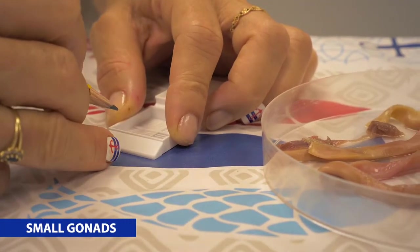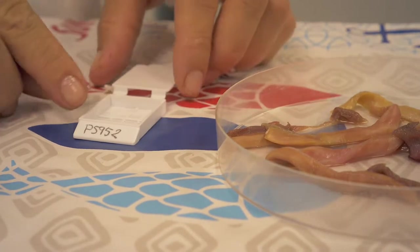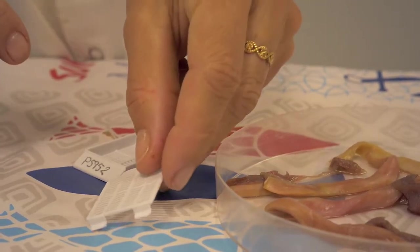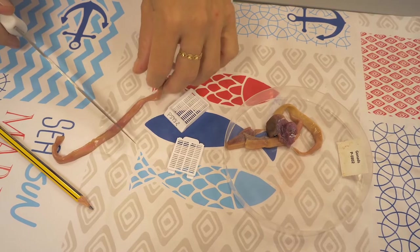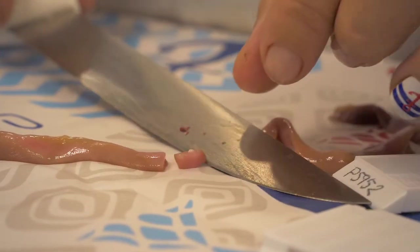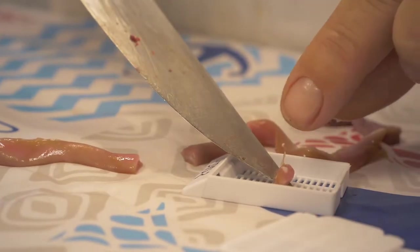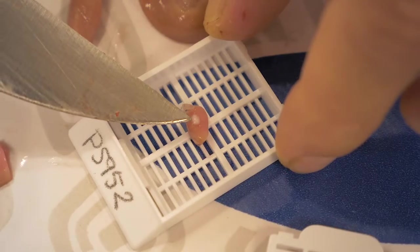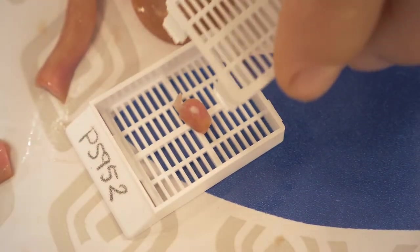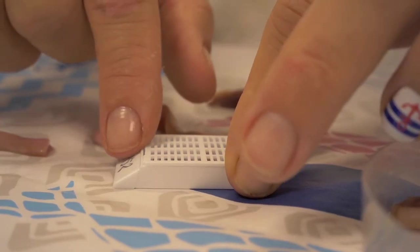For the sampling of small gonads, with a drawing pencil this time, write the sample number on the cassette. Remove the top of the cassette by twisting it lightly. Cut a 5 mm wide slice. 5 mm is the height of the cassette. Lay the slice flat in the cassette, with the lumen of the gonad facing upwards. In this example with a male gonad, the lumen is a cavity where you can see the sperm in the center of the gonad. Close the cassette firmly, making sure the lid is completely locked to the bottom part of the cassette. And put it in a vial containing 10% formalin solution.